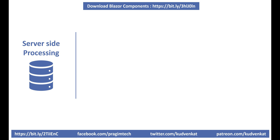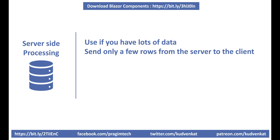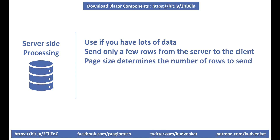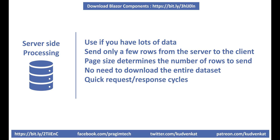Now, server-side processing: in general, if you have lots and lots of data — maybe several thousands or even millions of rows — it is better to perform processing on the server instead of the client. For example, if paging and sorting are processed on the server, we only need to send a few rows — 10, 15, 20, or maybe 100 — depending on the page size. There is no need to download the entire dataset onto the client machine. Request and response cycles are really quick because there are only a few rows to download. Also, database engines are much faster than doing the same operations in code on the client machine.